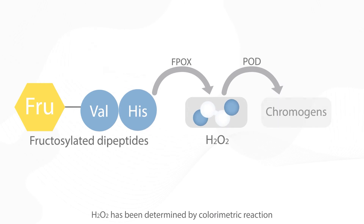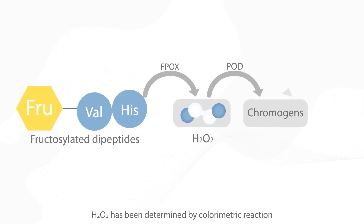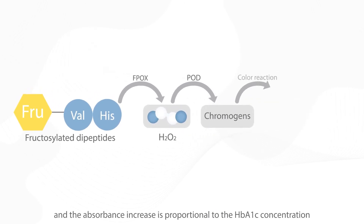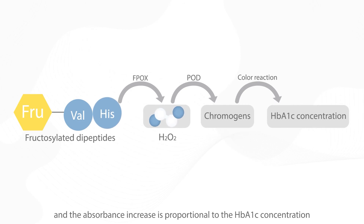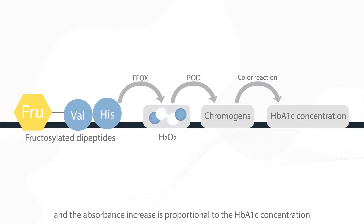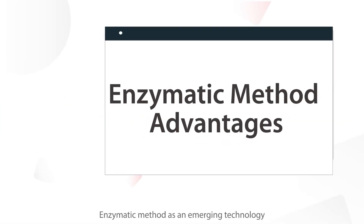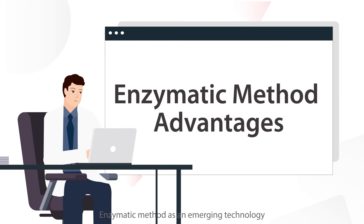Hydrogen peroxide has been determined by colorimetric reaction, and the absorbance increase is proportional to the HbA1c concentration. The enzymatic method is an emerging technology for HbA1c testing and has more advantages.